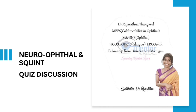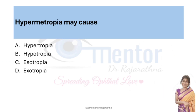Hello guys, we are going to discuss questions from neuro-ophthal and squints. Hypermetropia may cause convergence squint — the answer is esotropia.